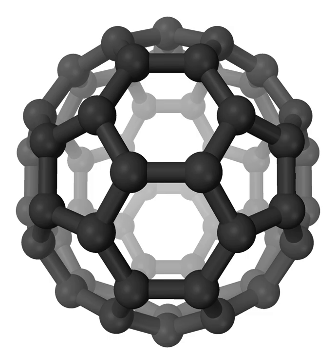Hydrogen isocyanide is a linear triatomic molecule with C∞v point group symmetry. It is a zwitterion and an isomer of hydrogen cyanide. Both HNC and HCN have large, similar dipole moments, with μ(HNC) = 3.05 Debye and μ(HCN) = 2.98 Debye respectively. These large dipole moments facilitate the easy observation of these species in the interstellar medium.